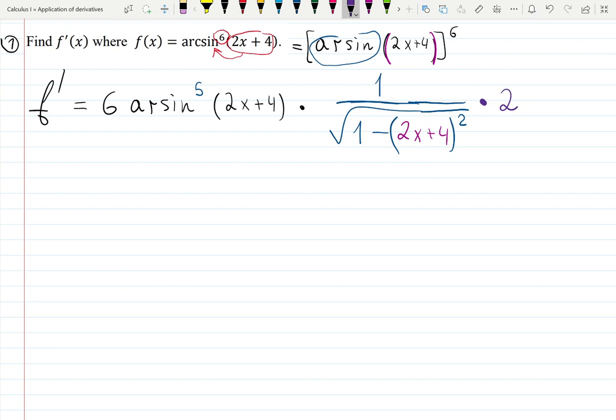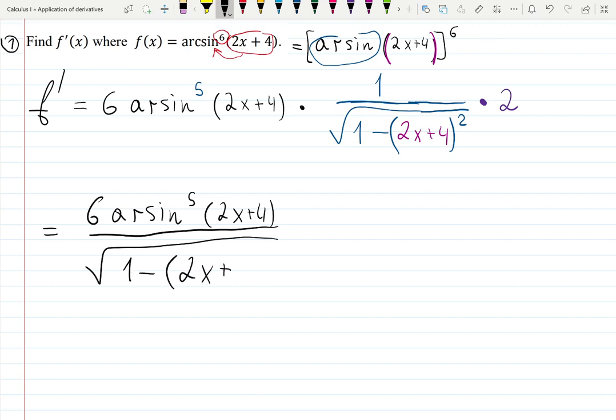You can speed yourself up by right away writing it this way. 6 arcsine to the 5, 2x plus 4. All over. The square root shows up because it's derivative of arcsine. 1 minus input squared, input is 2x plus 4 squared, and then times 2. This way it will speed you up on a test if you get it. If you get it, how this all showed up from where it is. Those are three things glued together. And to simplify, there's only one step missing. 6 times 2 is 12. Done. Put it in the box. Here it is.